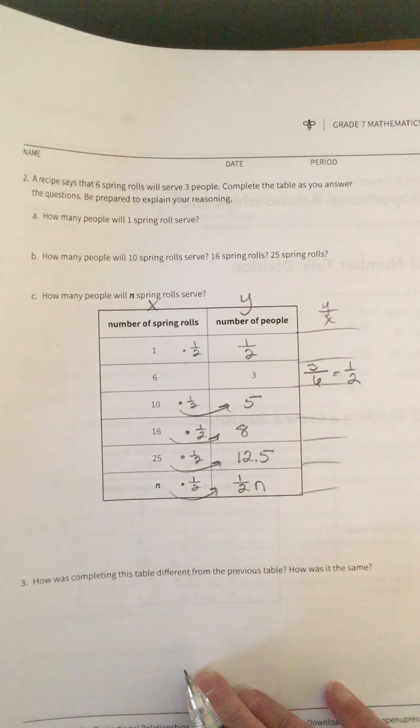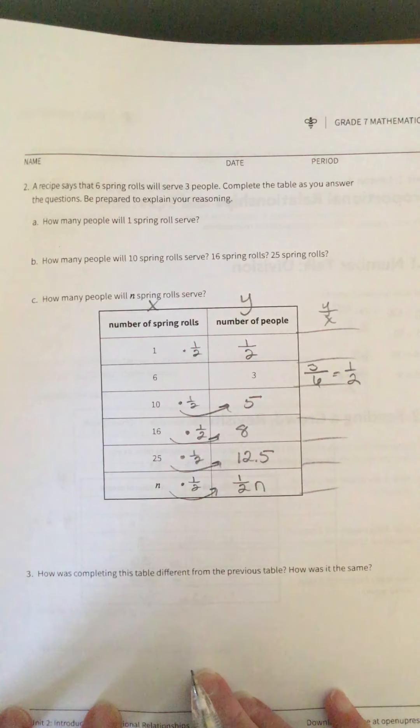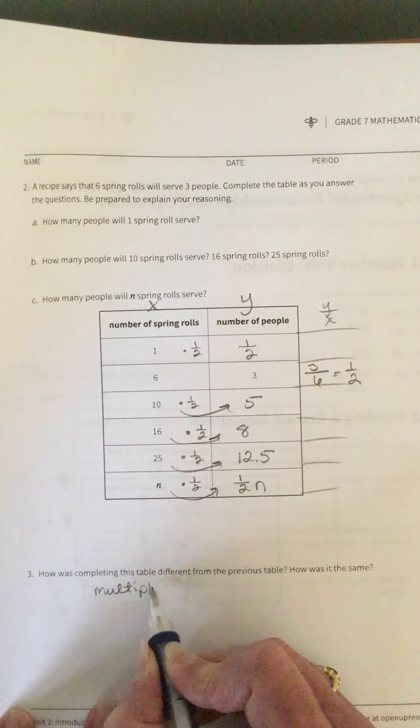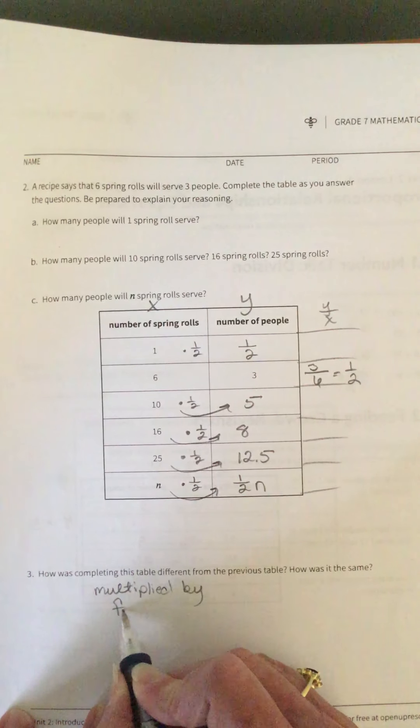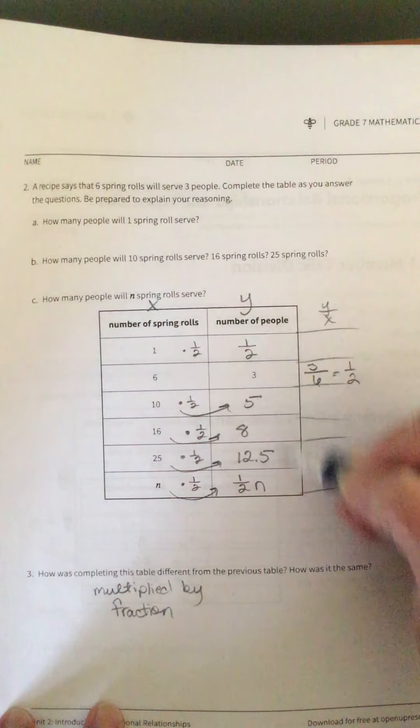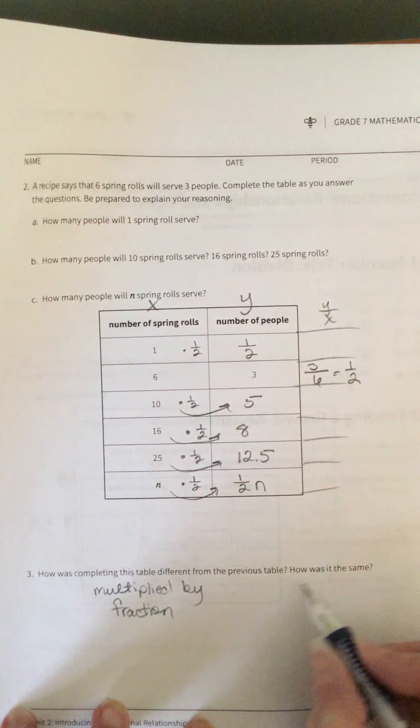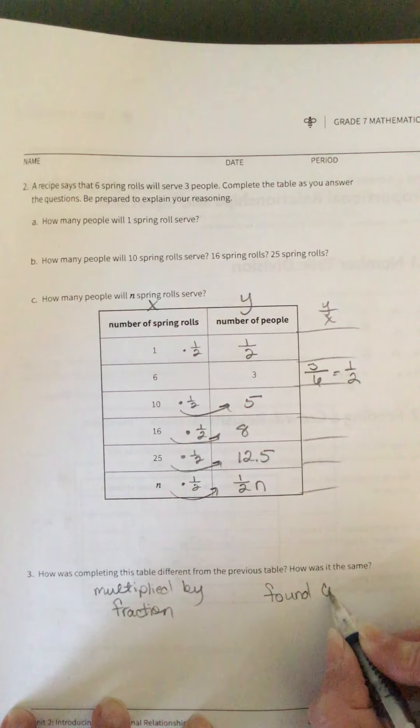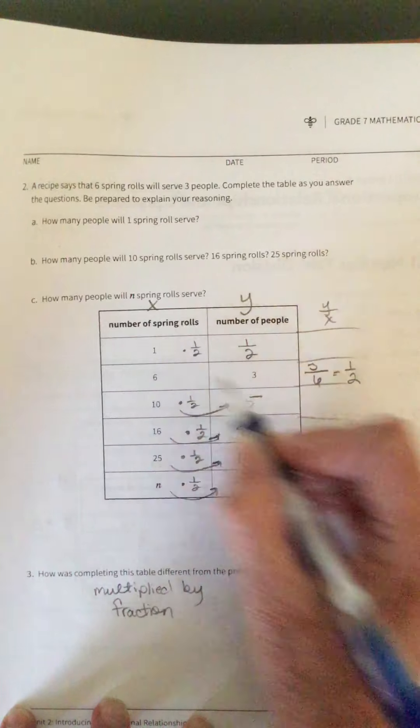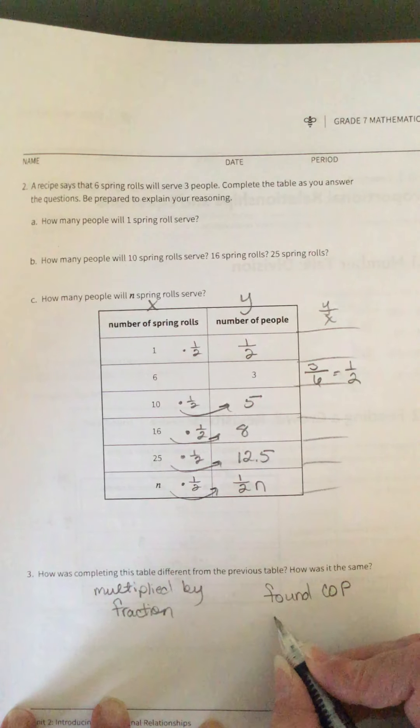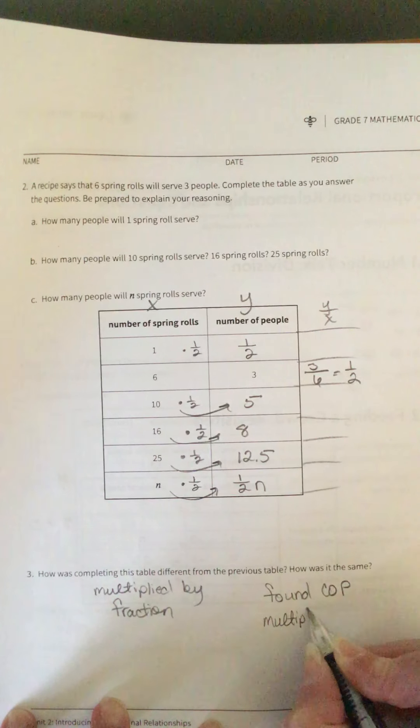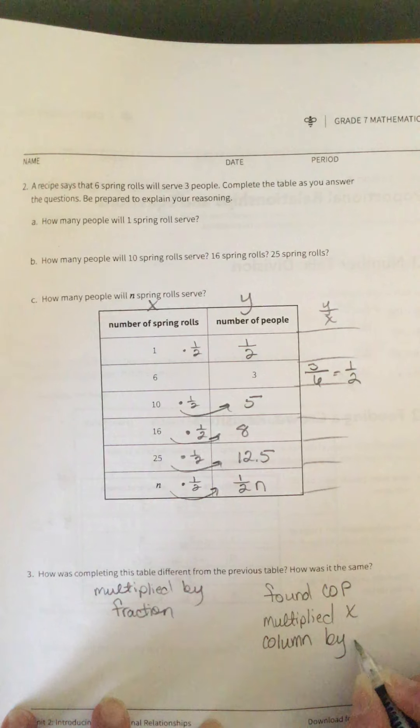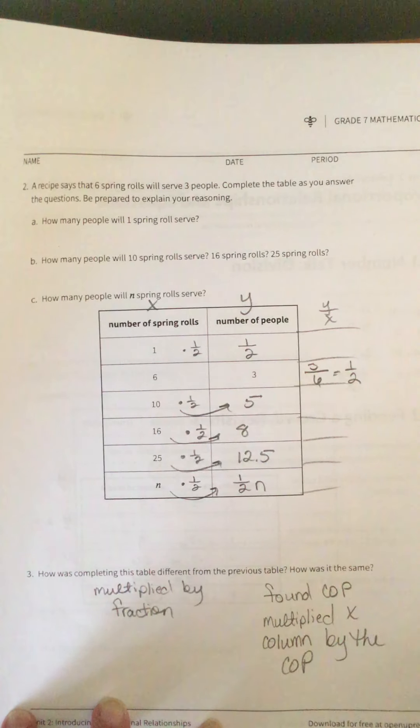Alright. So how is completing this table different from the previous table? Well, this time we multiplied by a fraction. I think we also ended up with not whole numbers all the time. How is it the same? Well, we found the COP, the Y over X, or the unit rate, right here is our unit rate, found the COP, and we multiplied the X column by the COP.